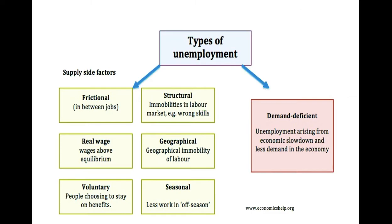Seasonal unemployment is another form of rural unemployment. It occurs during certain seasons of the year — when crops are not being grown or are not ready for harvesting, agricultural laborers have no work. Agricultural laborers in India rarely have work throughout the year; they work for only a few months and are said to be seasonally unemployed.